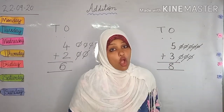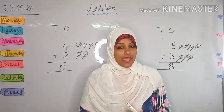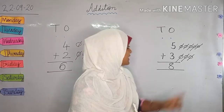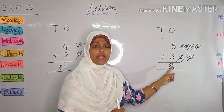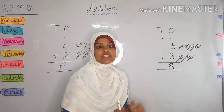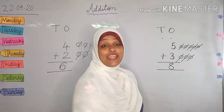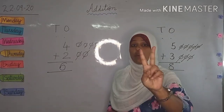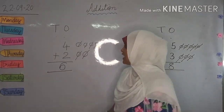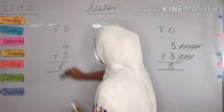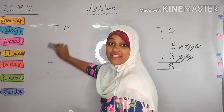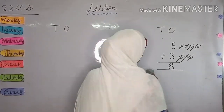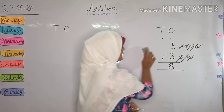I hope by now you know how to add single digit numbers, because these are only one-digit numbers under this place value. Today we are going to begin with addition of two digit numbers. So please pay attention.